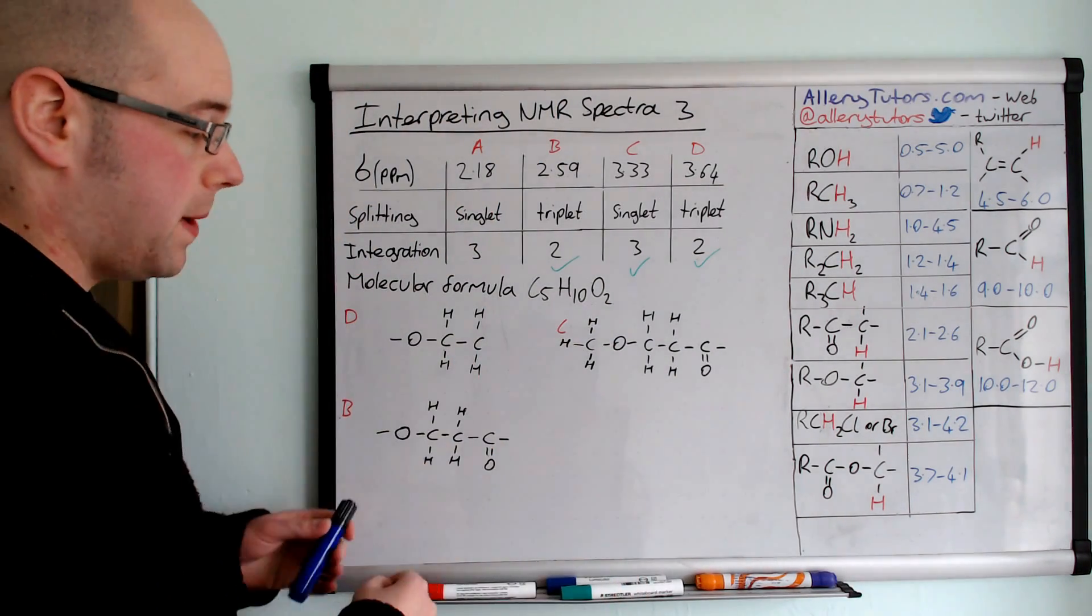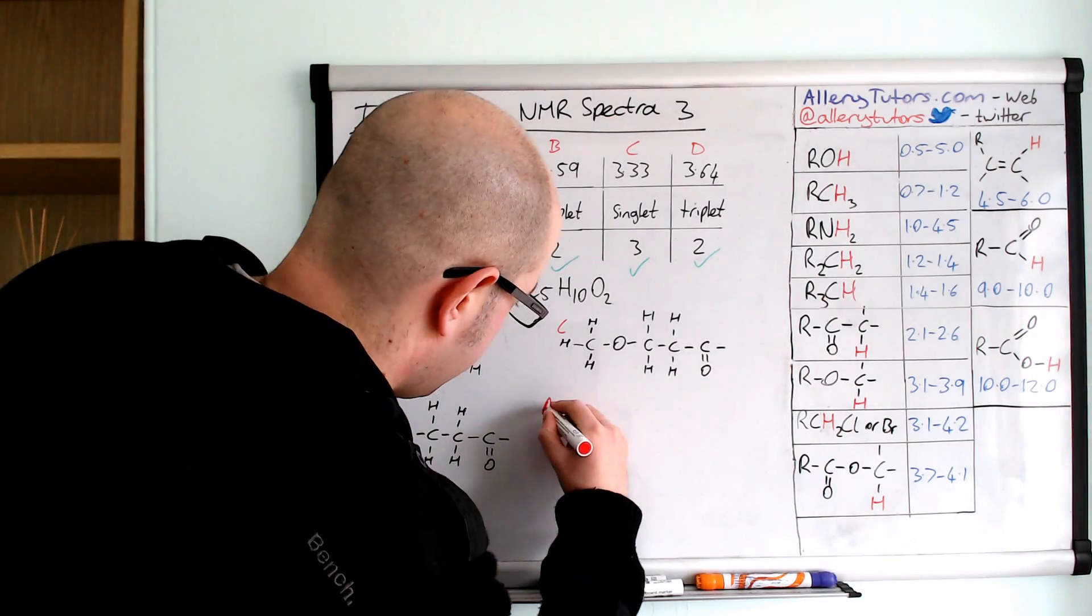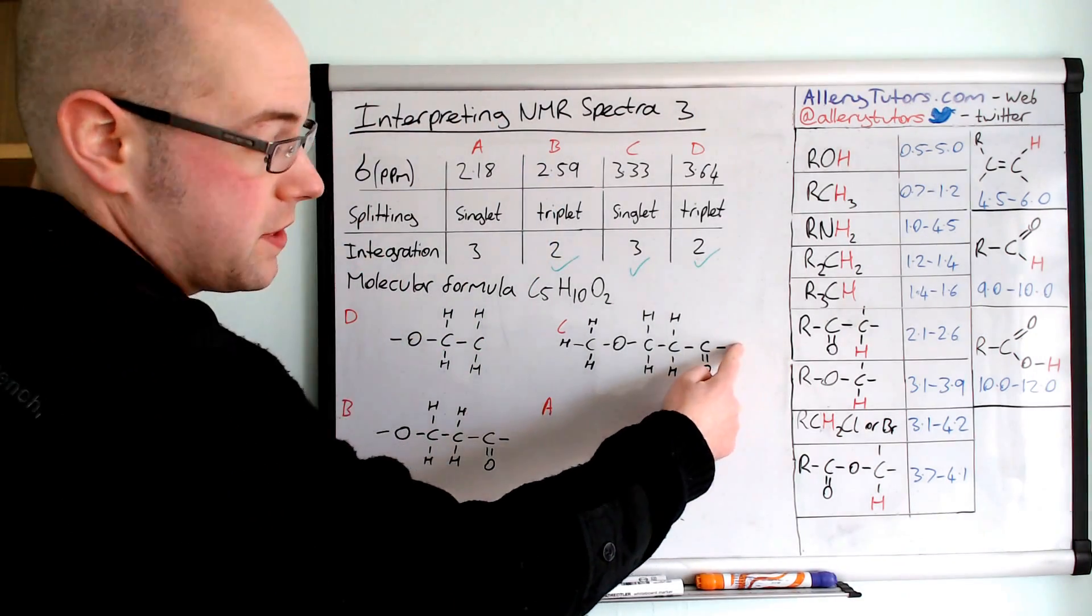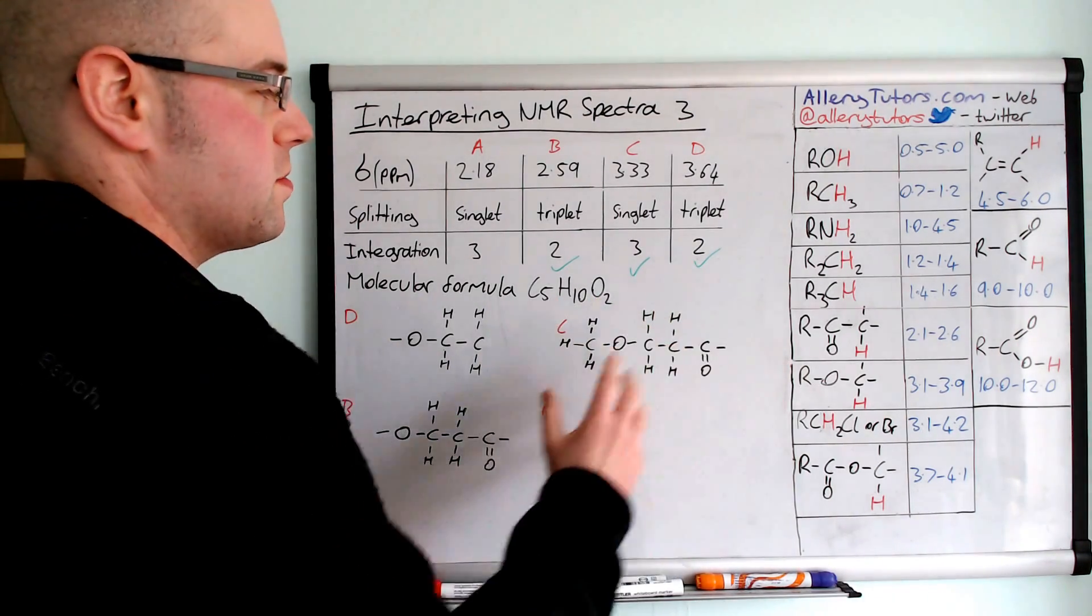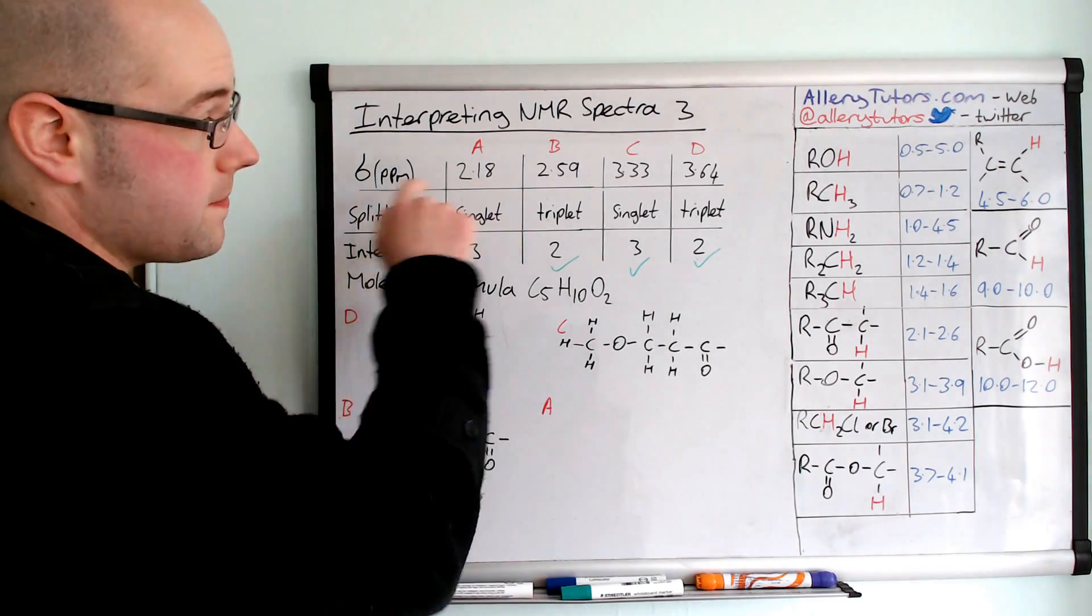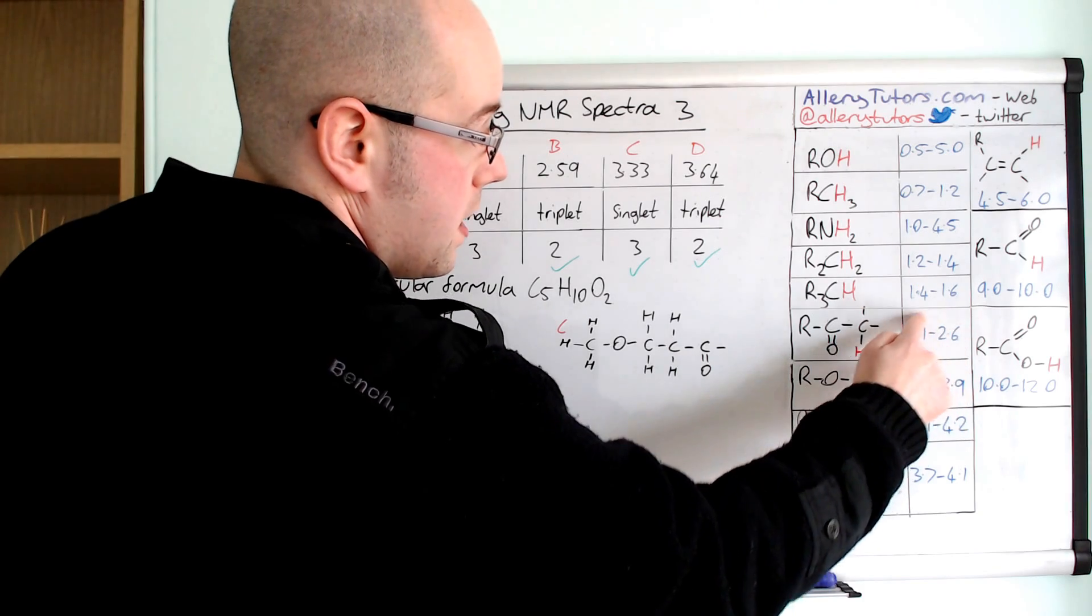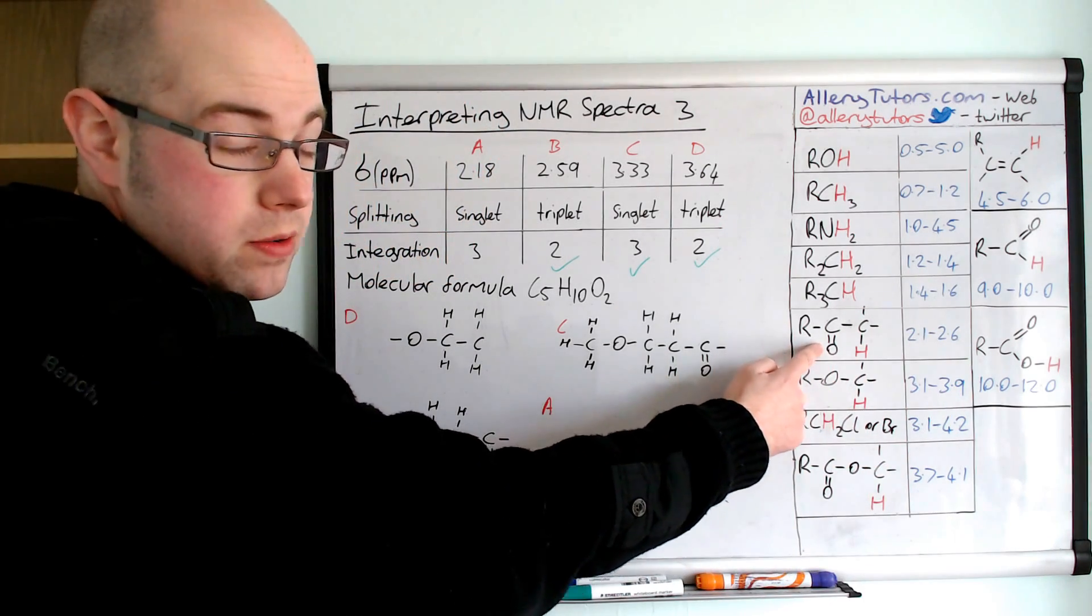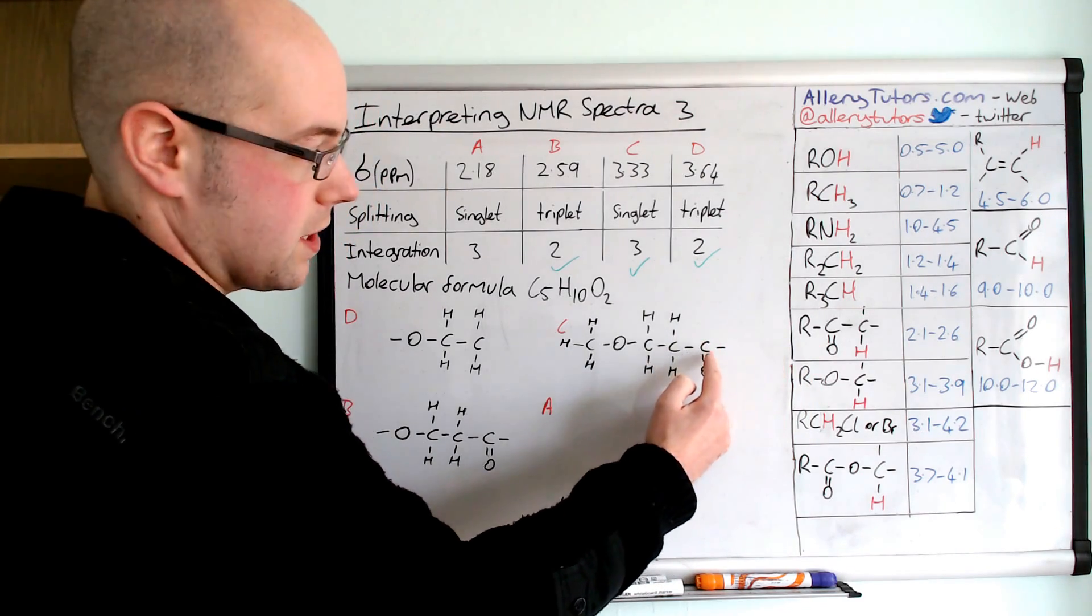We've only got one more peak now, and this is peak A. So peak A, we've only got one space left, and that's over here. All the rest of it's actually been used up, so this is getting a bit easier as we go along. We can see this is a shift of 2.18, and so that means if we come and look at our data, 2.18 would fit in this area here. So it's telling us that we have a C=O, or hydrogen next to a C=O, which is going to fit. So that fits there.